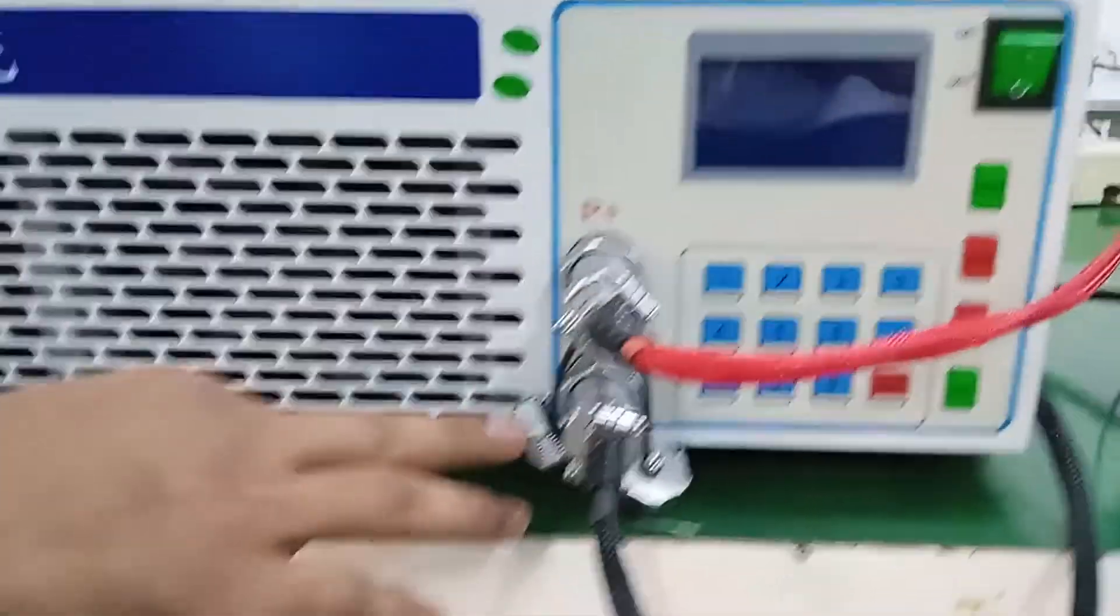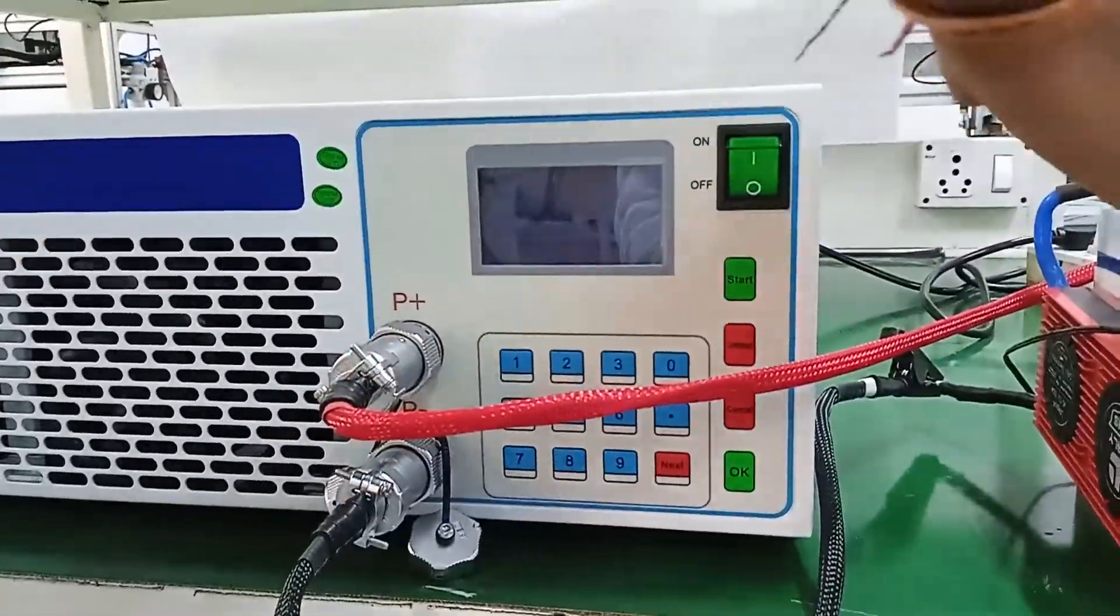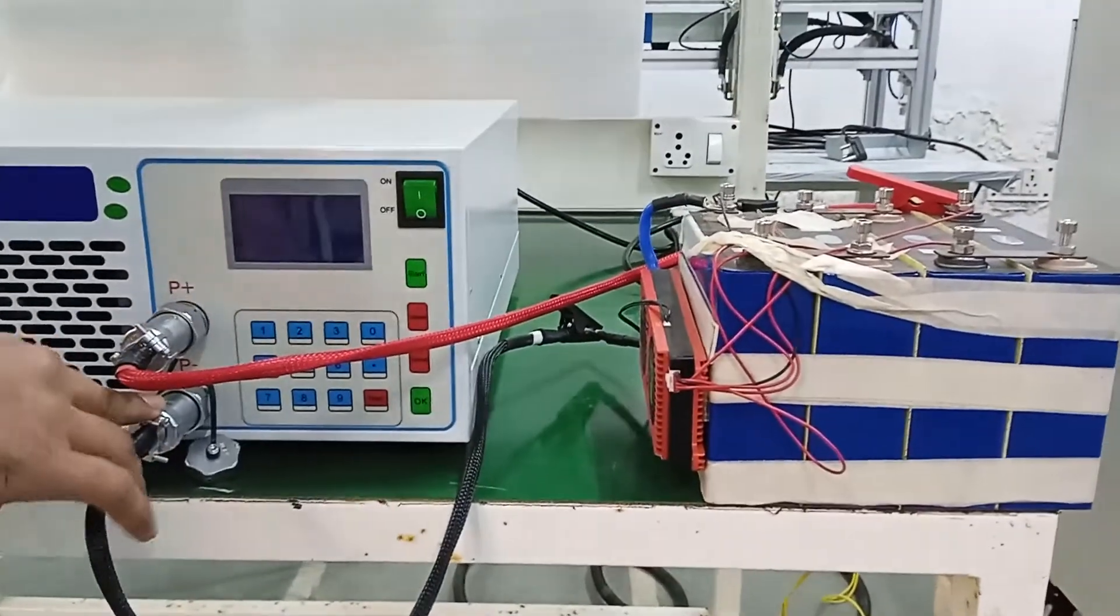And the other thing is that it has one P plus and P minus. This is a discharging port for battery to connect our battery. P plus means positive port and P minus is negative port.